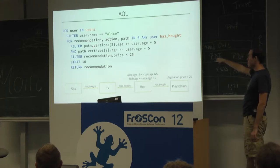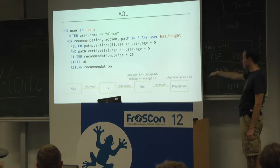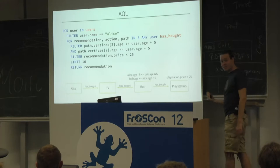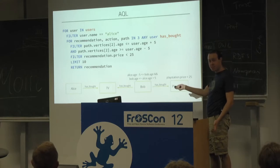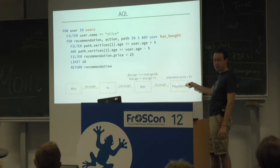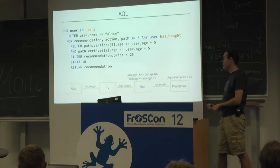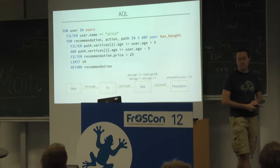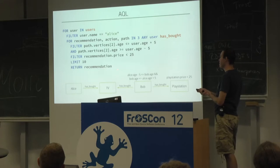On the path we can apply filters — for example, the second vertex entry on the path should be in the same edge area as my user. The optimizer figures out that as soon as the algorithm stands at this point and this condition doesn't match, it can abort early without computing the rest. And of course we can do additional filtering on the other returned objects such as the recommendation, combined with limits, skip, sort, or whatever we need.